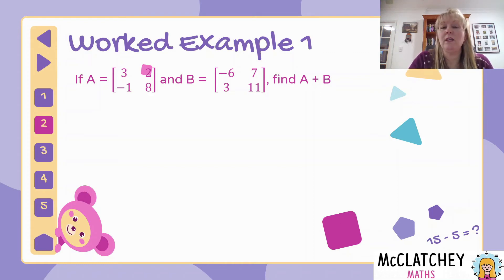What we're going to do is start with element number 11, which is in our first row and our first column. We've got three plus negative six, which would give us negative three. So we put that into the exact same position in our new matrix, which is A plus B. Then I'm going to move down to element 21, which is row two, column one. I'm going to take negative one and add three, which gives me positive two.